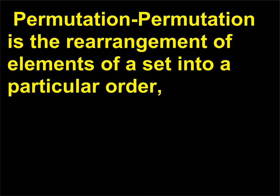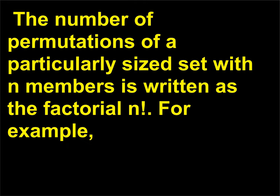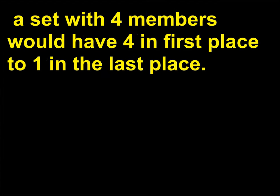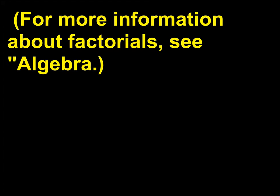Permutation is the rearrangement of elements of a set into a particular order, often in a one-to-one correspondence. The number of permutations of a set with N members is written as the factorial N. For example, a set with four members would have 4 × 3 × 2 × 1 = 4! = 24 permutations of four members. For more information about factorials, see Algebra.